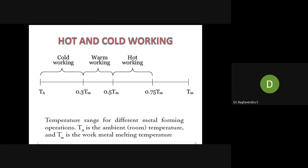If you raise the temperature a little, that is called warm working. Warm working temperature lies between 0.3 Tm to 0.5 Tm (where Tm is the melting temperature). If you heat the metal to a red-hot state — above 0.5 Tm to 0.75 Tm — that range is called hot working. You can see this from the blacksmith: whenever you want to sharpen a tool, you heat it until it reaches the red-hot state.